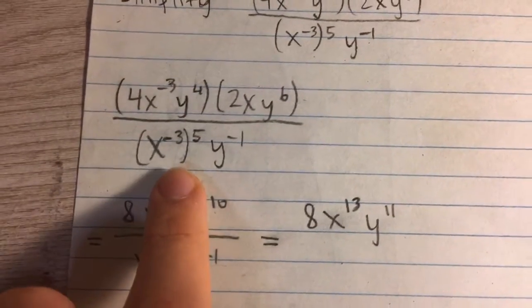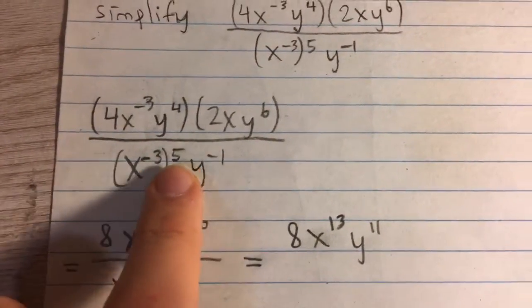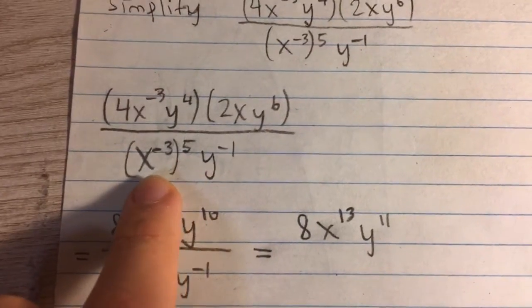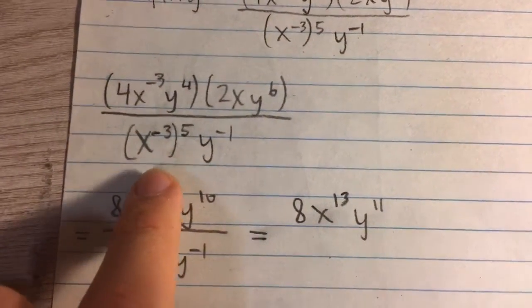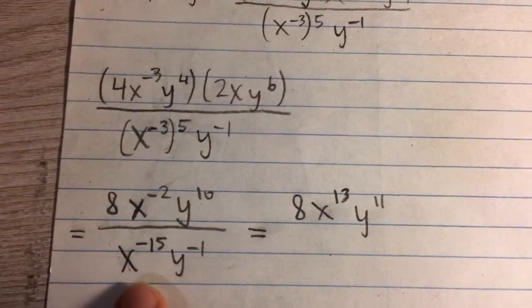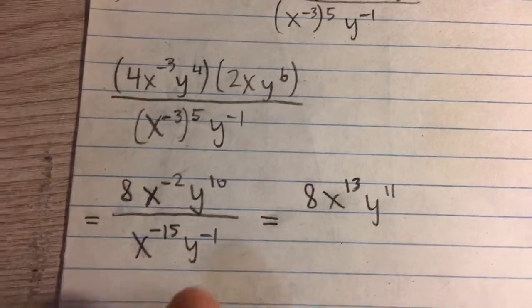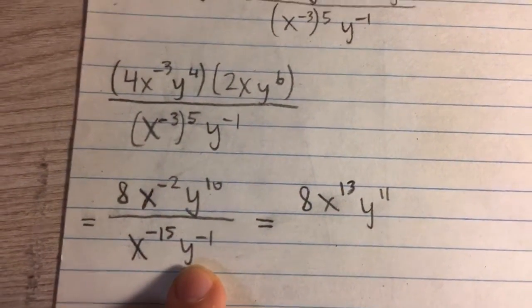Now in the denominator, we have a power to another power. In this case, we have to multiply the exponents, so we get x to the negative 15, and then y to the negative 1 is just the same.